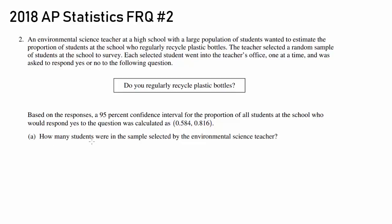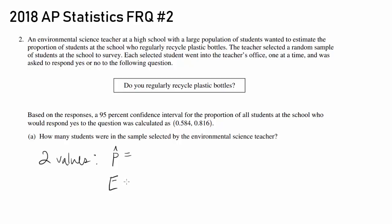Part A: How many students were in the sample selected by the environmental science teacher? The quickest way is to go ask the teacher directly, but let's go another route by looking at this confidence interval for the proportion. There are two values you can calculate from this confidence interval: one is the sample proportion, and the other is the margin of error.